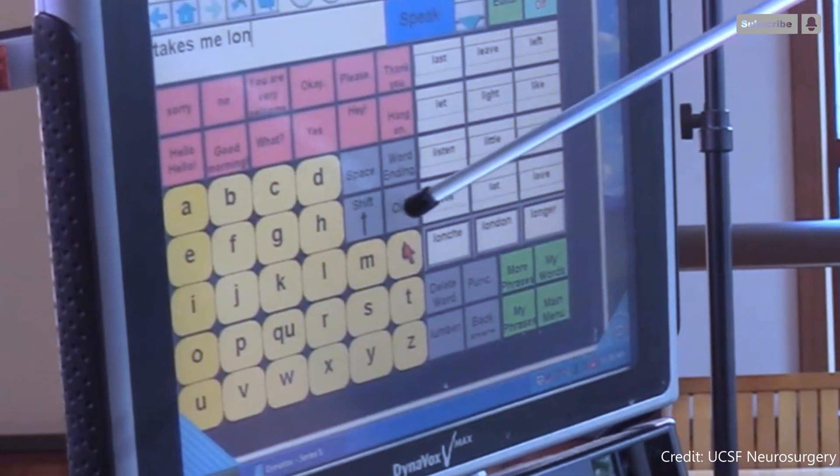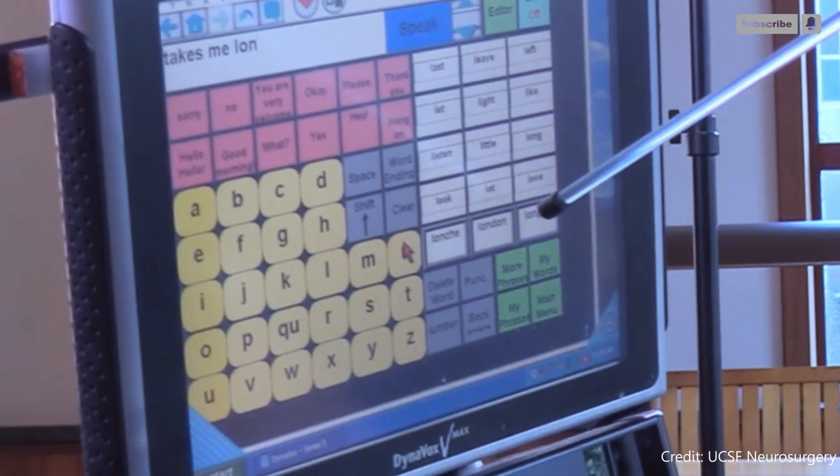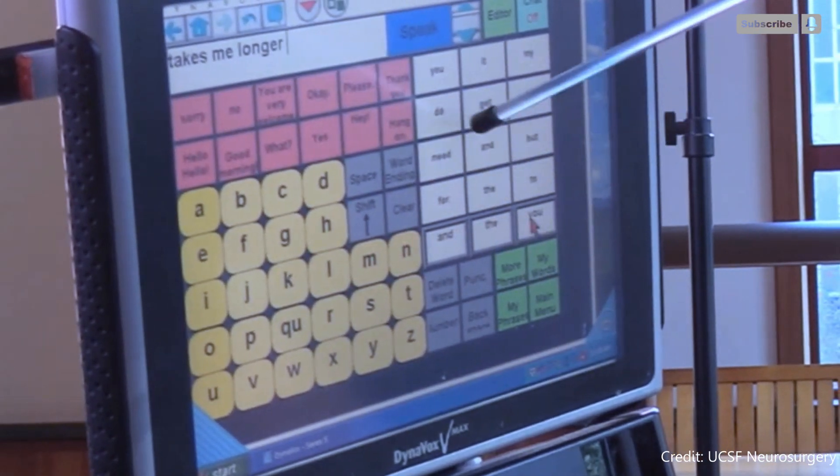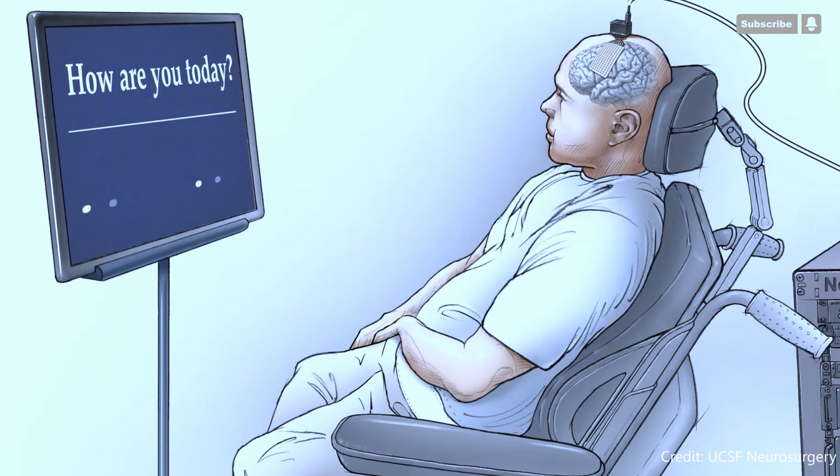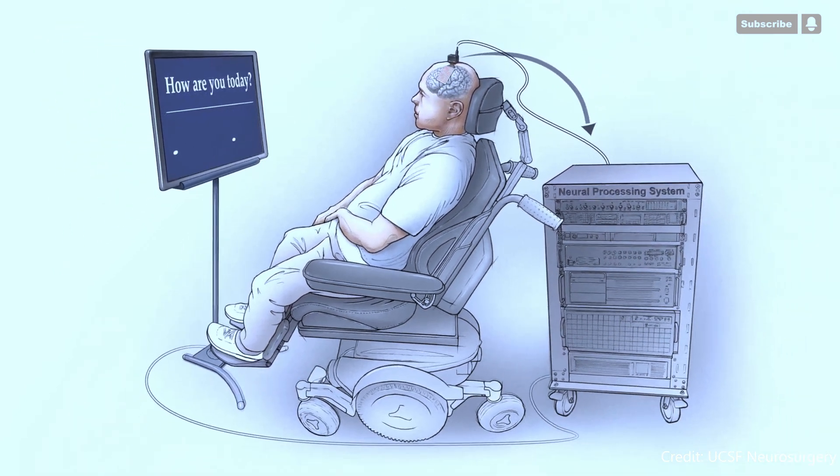The speech motor cortex of his brain was surgically covered with a high-density electrode by the researchers in 2019, and they have since been able to track the various electrical signals created when he attempts to utter different words or letters thanks to the BCI implant in his skull.